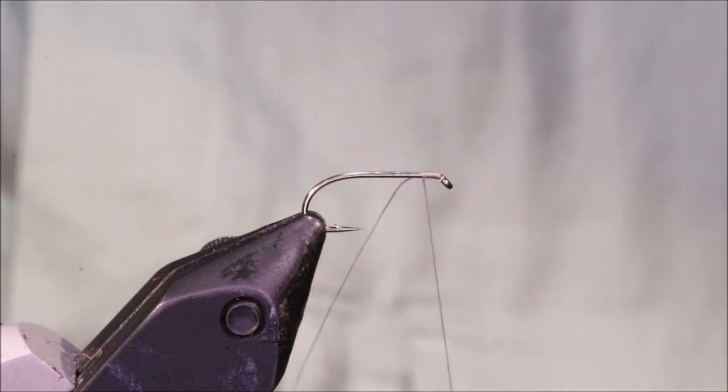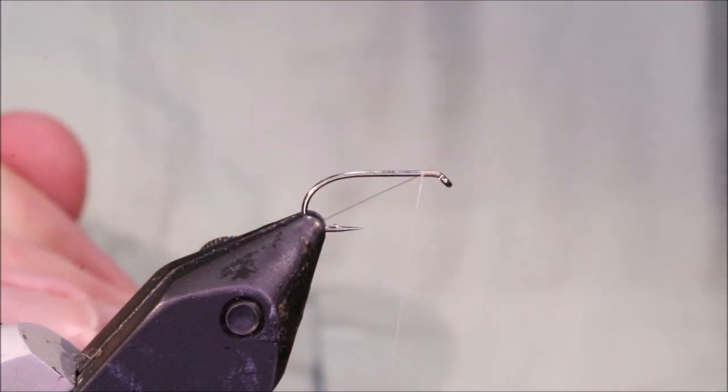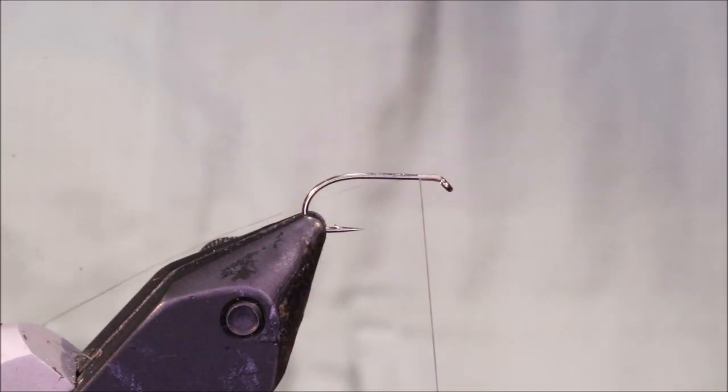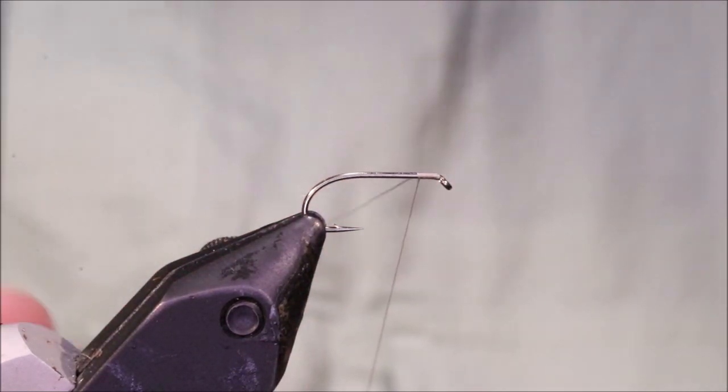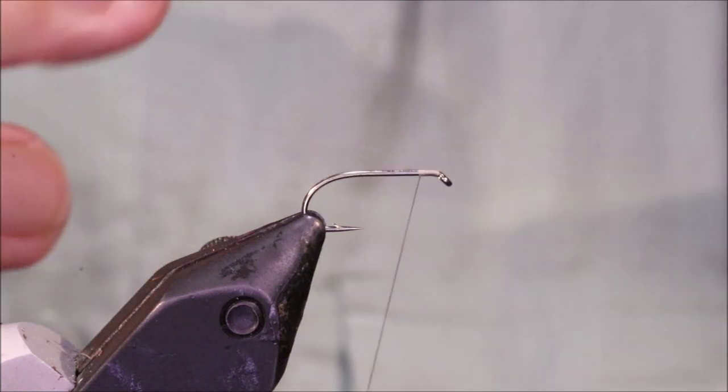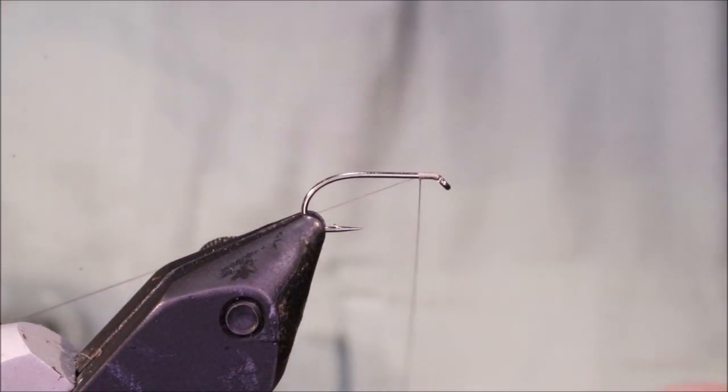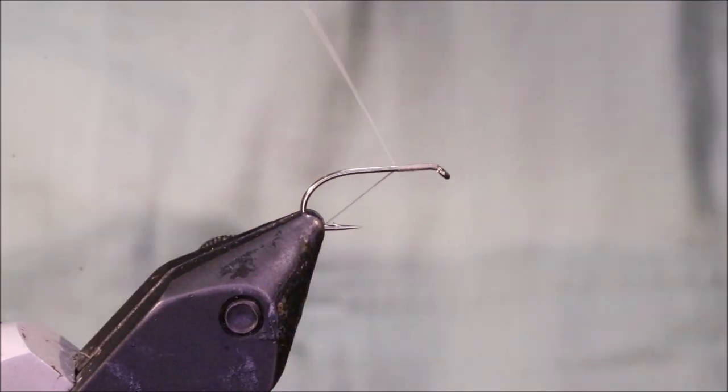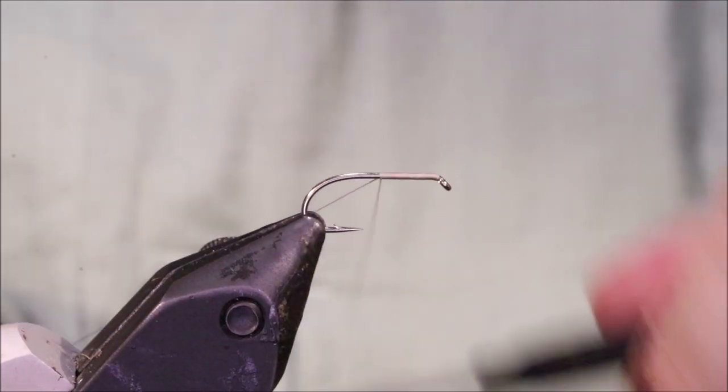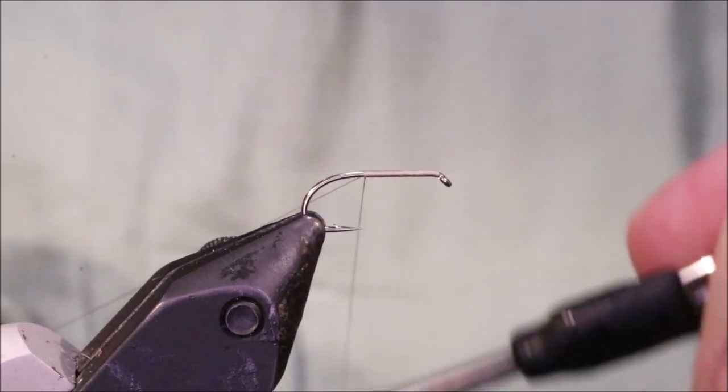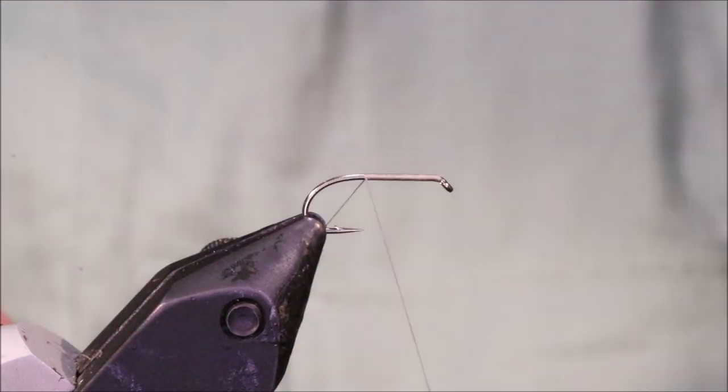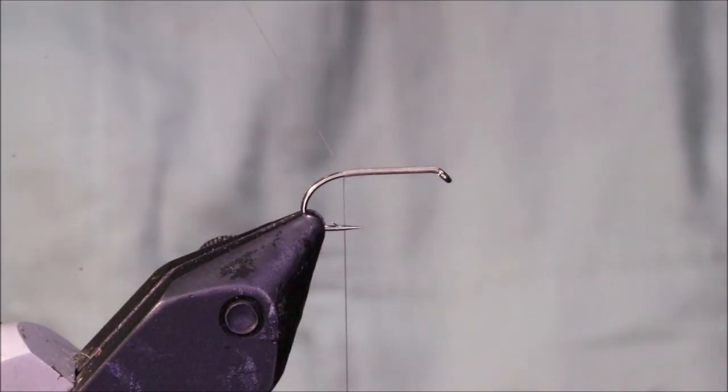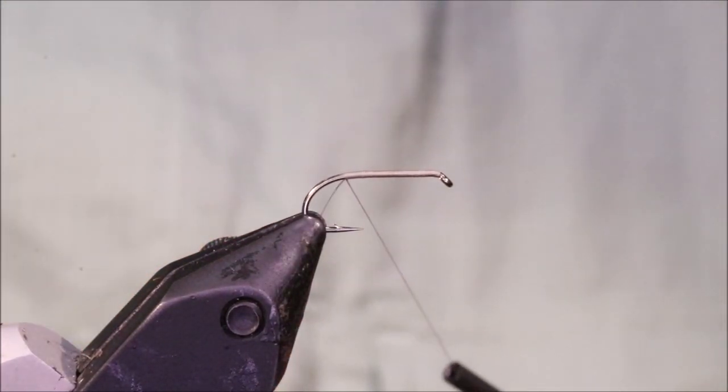So I've got my hook in my vise, this is a size 12 Kamasan B170, it's like a medium wire hook. You can use a dry fly hook if you want, but I like that slightly stouter hook on this. I've started here some rust-dun uni in 8-0, but you can use brown or olive or whatever you like. I'm running the thread along the shank and I'm holding my tag end of the thread down towards myself because I'm going to use this for the rib, but I want it out the way when I tie in the tail.